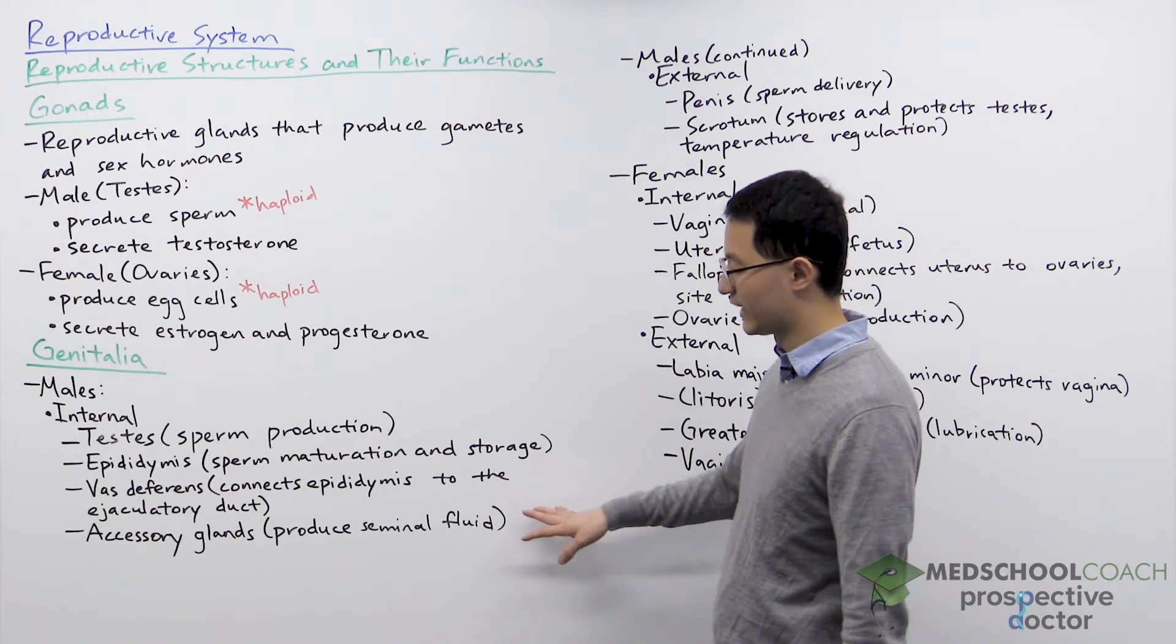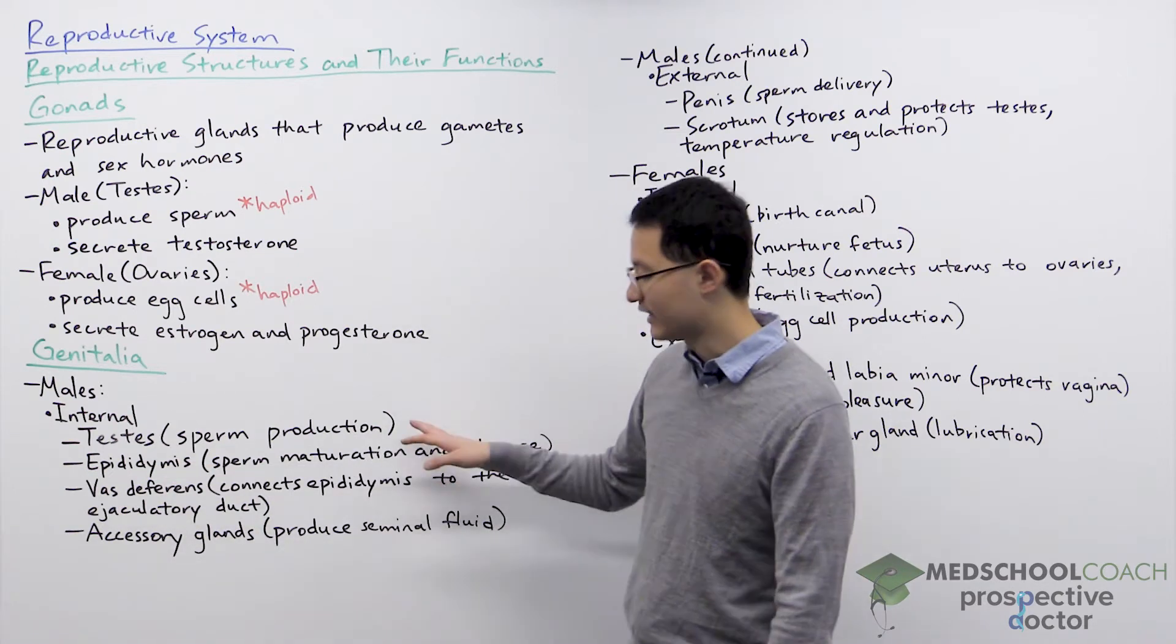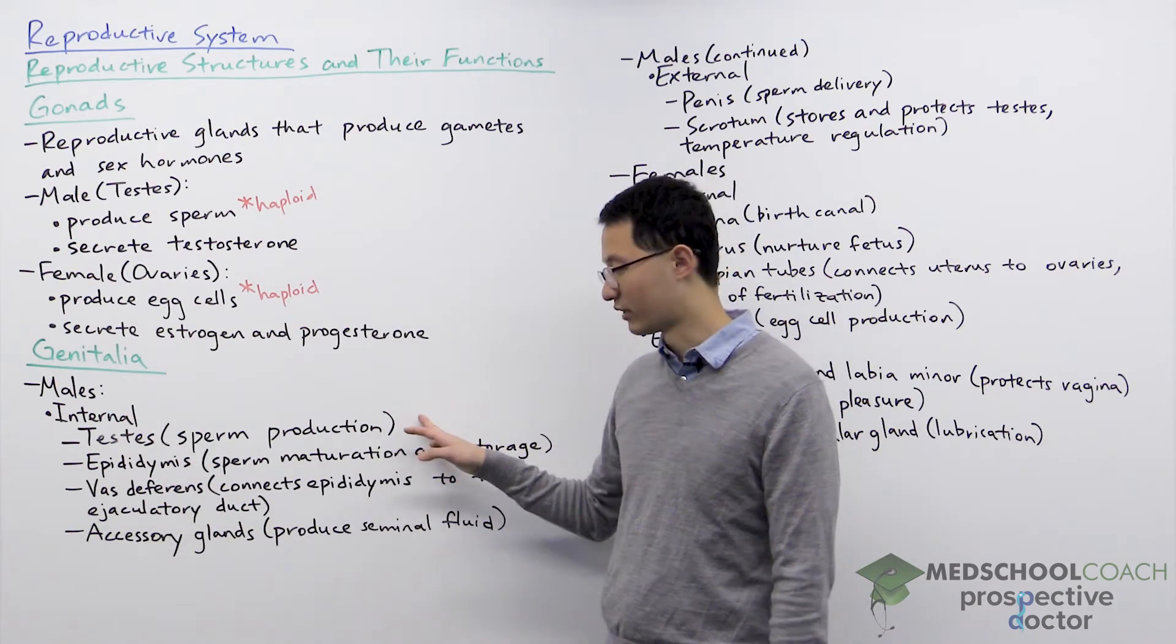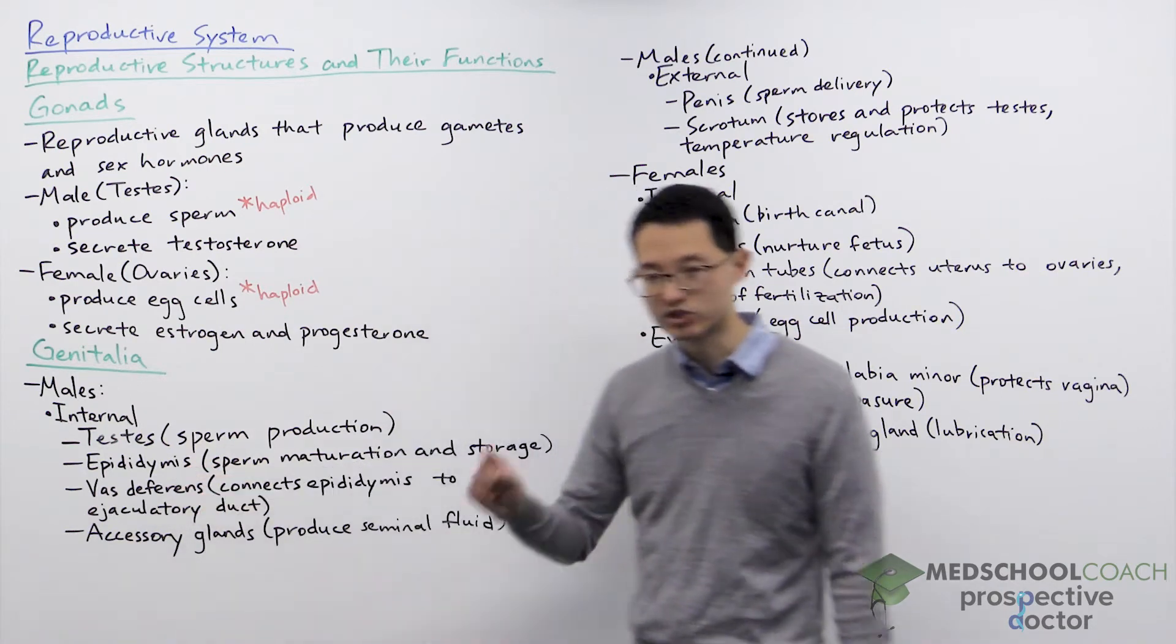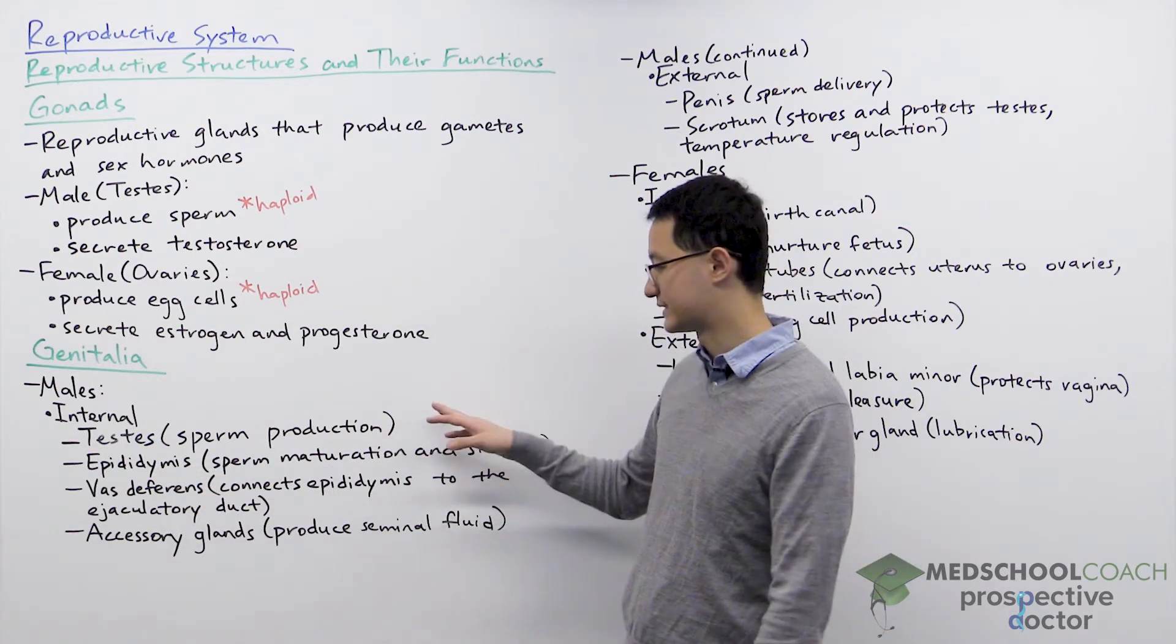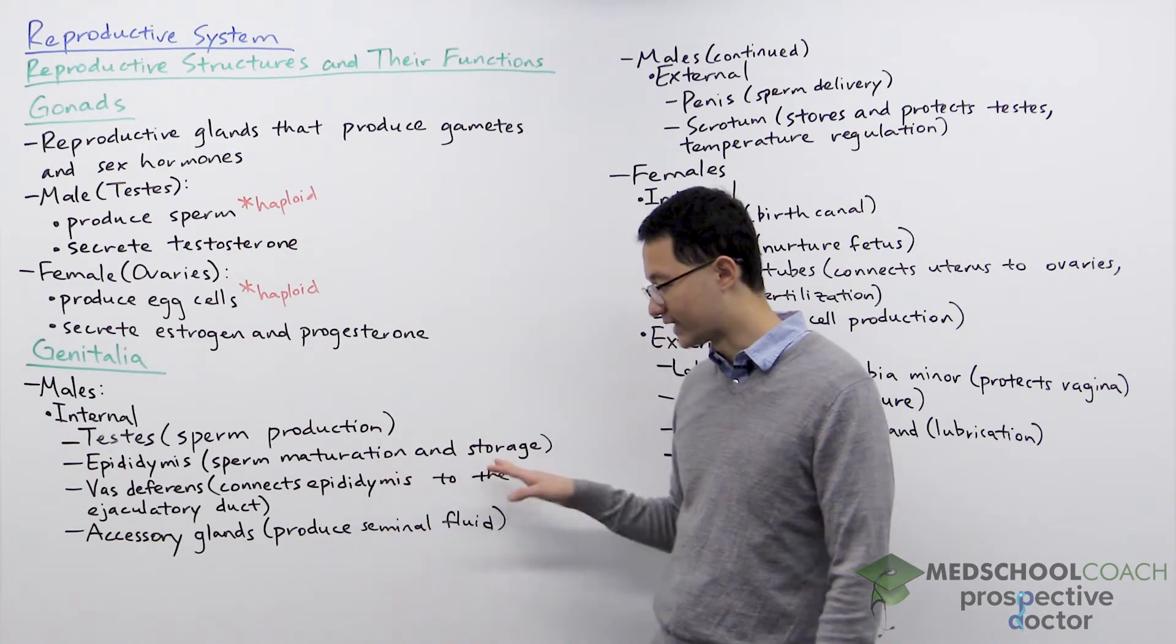For the internal genitalia we have the testes. These are stored inside the scrotum and they're important for producing sperm. We also have the epididymis. The epididymis is a structure that is attached to the testes and this structure is for sperm maturation and storage.